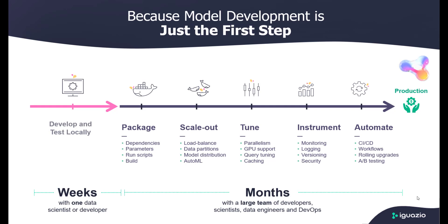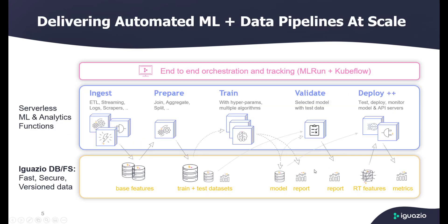It involves many different steps, such as packaging our code, scaling out our workloads for data and training, tuning for performance, adding instrumentation, logging, monitoring, versioning, security, etc., and finally automating the entire process so it can become repetitive. That process can take many, many months. On the Iguazio platform, we can automate all of that using various tools. So when we look at a complete pipeline which involves all those different steps, on the Iguazio platform we have three different layers.